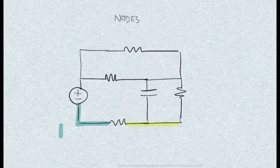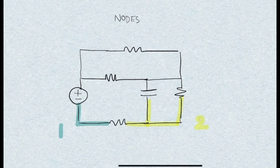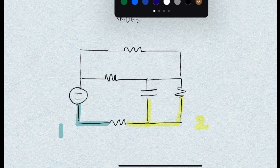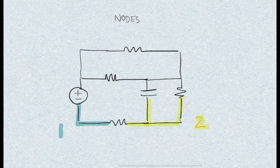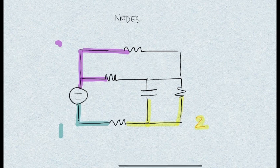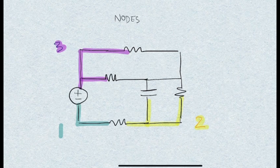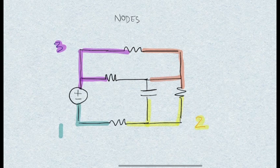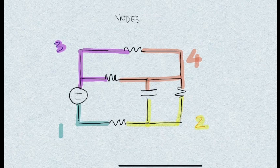For the second node, we start highlighting from the other terminal of this resistor and highlight all the paths until we reach two dead ends: one terminal of the capacitor and one terminal of the resistor. For the third node, we start at the second terminal of the power supply and highlight all paths until we reach two dead ends — terminals of the resistors. For the fourth node, we start at one of the resistors and highlight all paths until we reach three dead ends: terminals of two resistors and one capacitor.